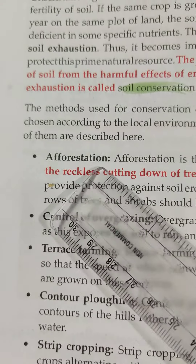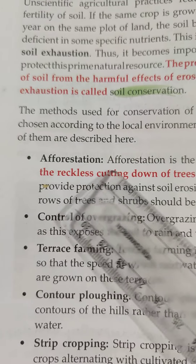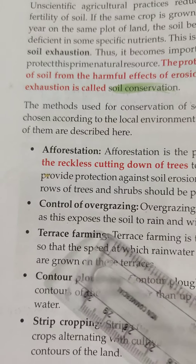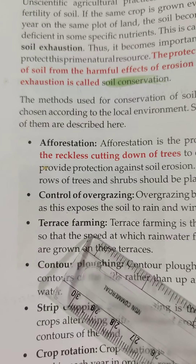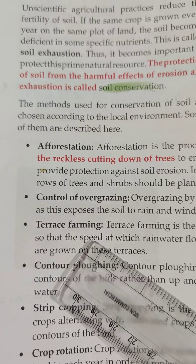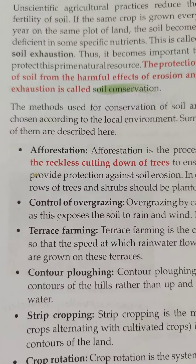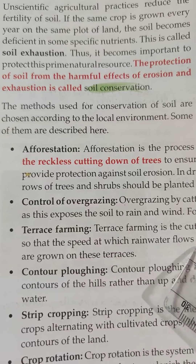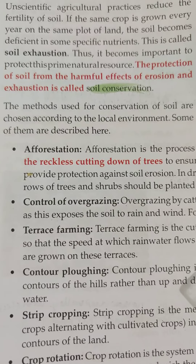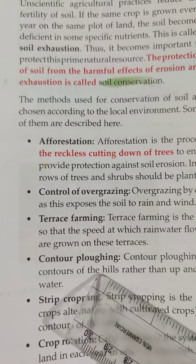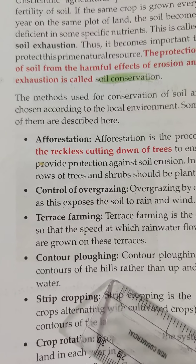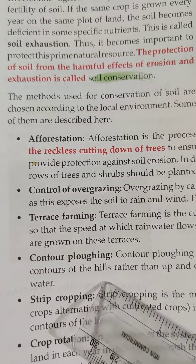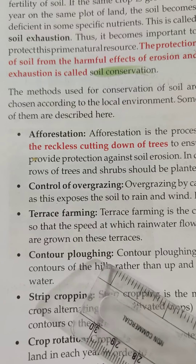We can conserve soil through afforestation by planting more and more trees, and by controlling overgrazing by cattle and sheep. Terrace farming should be practiced on hill slopes where land is cut into steps or terraces so that the speed at which rainwater flows down the slopes can be checked. Contour plowing is plowing of fields along the natural contours of the hills rather than up and down the slopes, which also checks the flow of water.